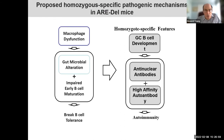A general summary of the SLE and PBC disease characteristics we've seen: there's macrophage dysfunction, a gut microbial alteration in homozygotes that impairs early B-cell maturation, and germinal B-cell development producing anti-nuclear antibodies and high-affinity autoantibodies resulting in autoimmunity.